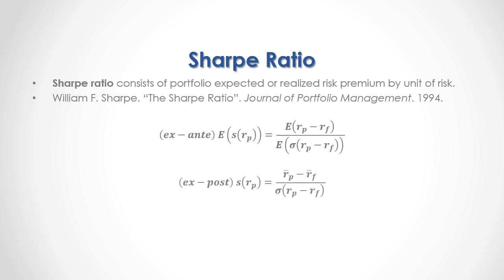Then we have the ex post or realized Sharpe Ratio of Portfolio Returns, which is equal to — within the numerator — the portfolio returns mean minus the risk-free return mean, which is then divided by the risk premium standard deviation. Notice that within these formulas we can use a benchmark rate of return instead of the risk-free return.